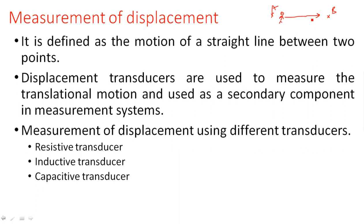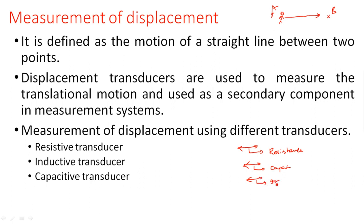Measurement of displacement uses different transducers, which are based upon variation of different parameters like resistance, capacitance, or inductance. If displacement changes the resistance of the measuring device, such devices are known as resistance transducers. If displacement causes changes in capacitance, those are capacitor transducers. If displacement causes inductance change in the measuring instrument, that is known as an inductive transducer.